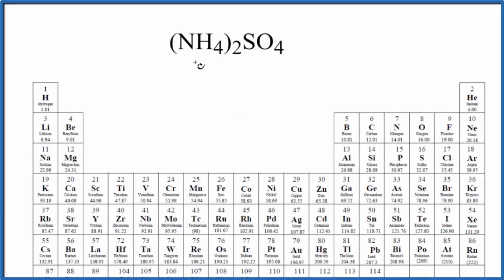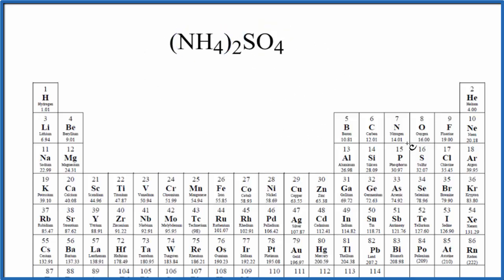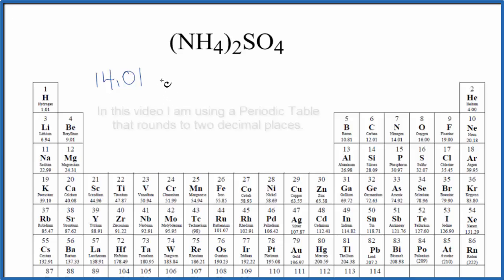In this video, we'll find the molar mass for NH₄₂SO₄. This is ammonium sulfate. On the periodic table, nitrogen is 14.01 grams per mole. I won't write grams per mole each time — we'll do that at the end.